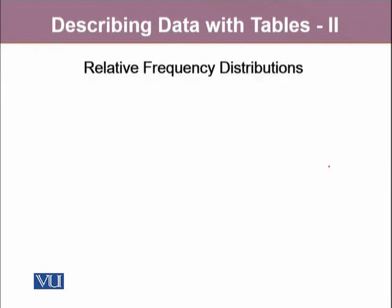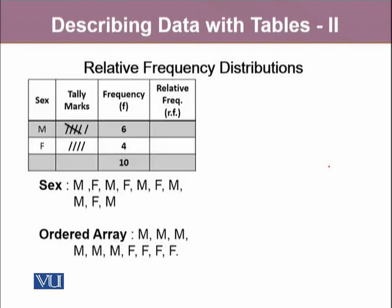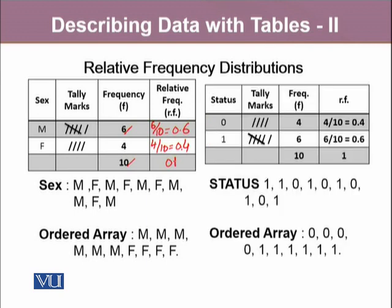We can also construct a relative frequency distribution for categorical variables. Once we have the frequency distribution of a variable like sex, relative frequency distributions are obtained by taking the proportions. It is the frequency divided by the total number of observations, which equals 0.6 for male and 0.4 for female. Relative frequencies always add up to 1. As soon as we add a relative frequency column into a frequency distribution, it becomes a relative frequency distribution.